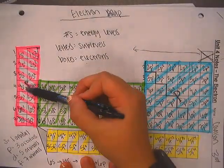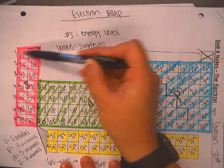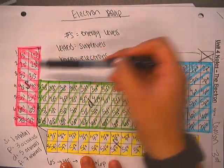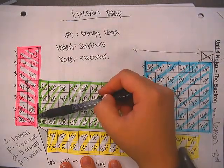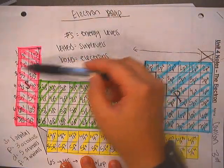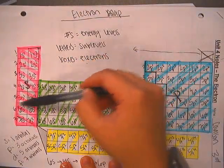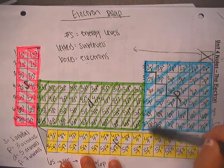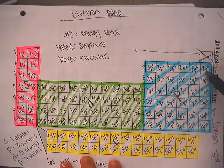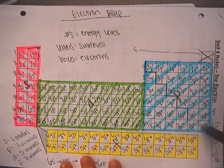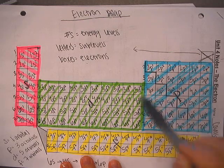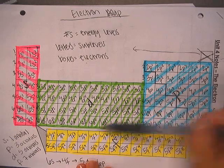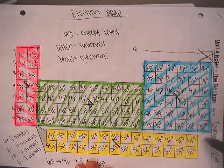Within the S sub-level, the most electrons at any given energy level that you can have is 2. The most electrons that you can have at any given energy level in the P sub-level is 6. The most electrons in the D sub-level is 10. And the most in F would be 14.